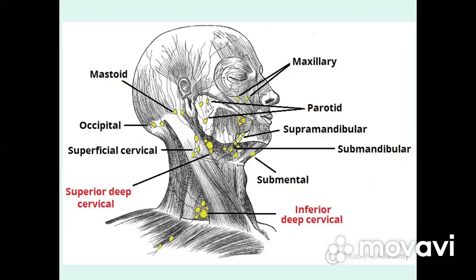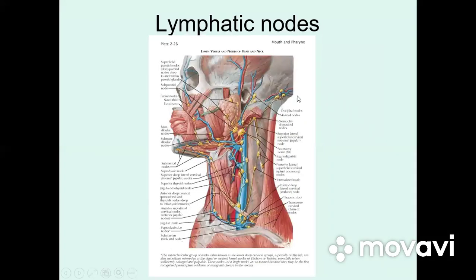The efferent vessels from these nodes extend to the deep cervical nodes. Occipital nodes and mastoid nodes are located at the level of the mastoid process of the temporal bone. Parotid nodes are divided into superficial and deep. Facial nodes include buccal, mandibular nodes, submental nodes, and submandibular nodes.